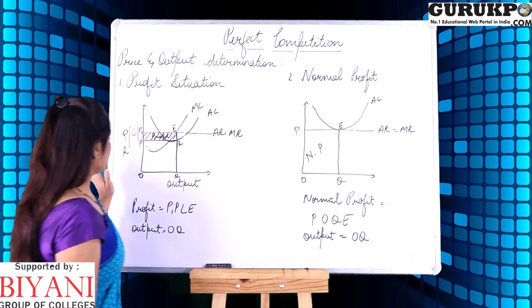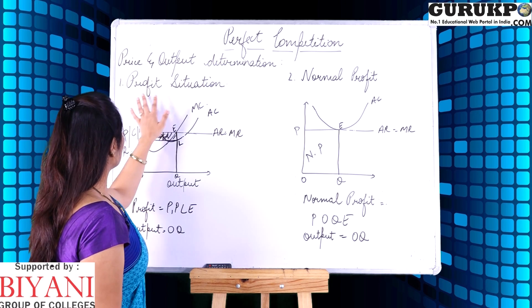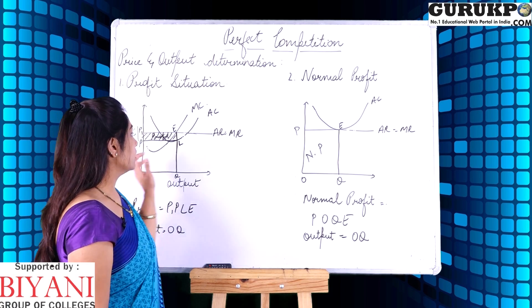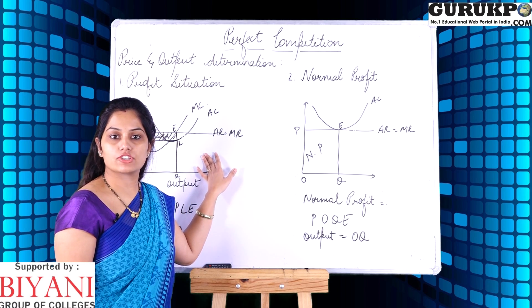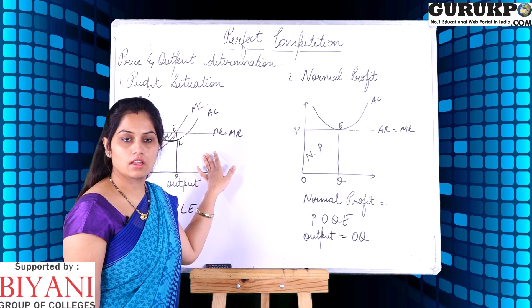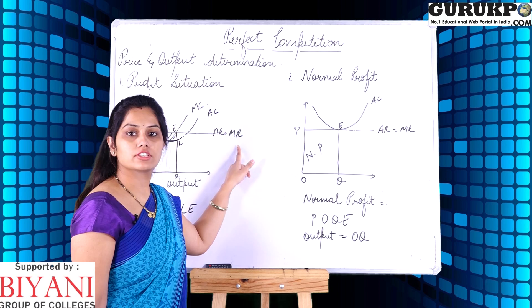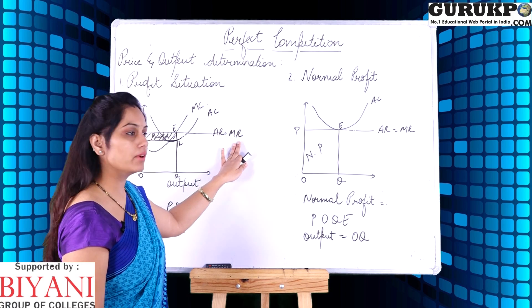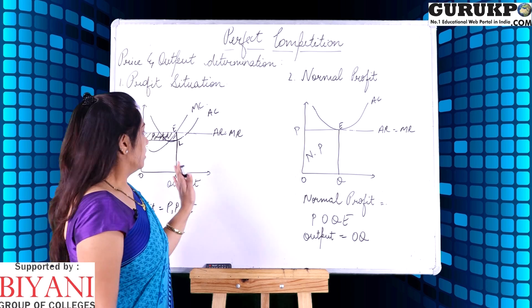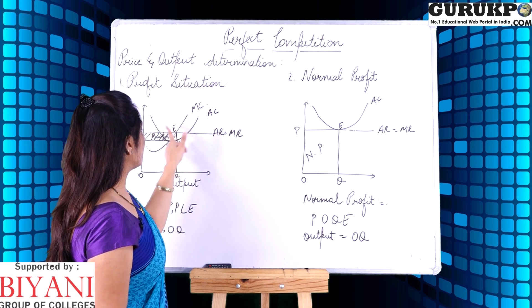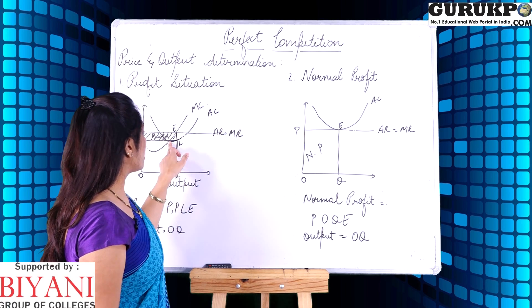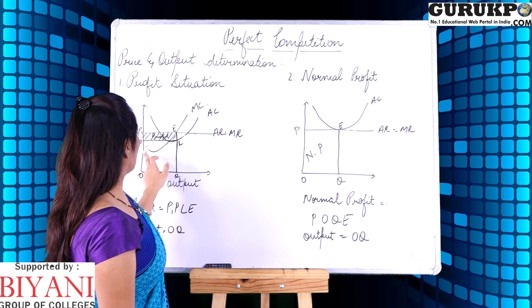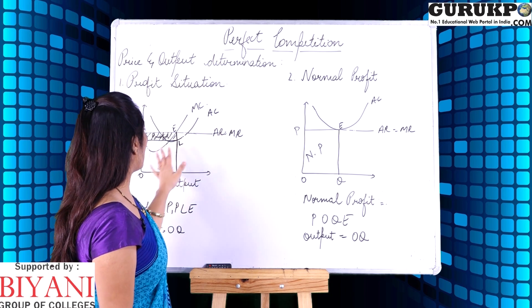Let's start with the diagram. The x-axis shows output and the y-axis shows price, cost, and revenue. As one of the characteristics of perfect competition is identical prices, average revenue (AR) is equal to marginal revenue (MR), so their line is the same and parallel to the x-axis. The marginal cost curve is upward sloping and the average cost curve is U-shaped, with the AC curve cutting the MC curve at its minimum point.